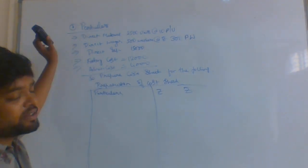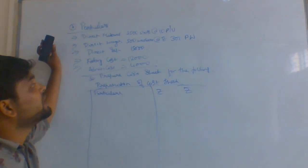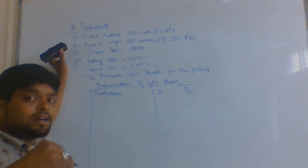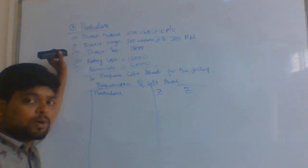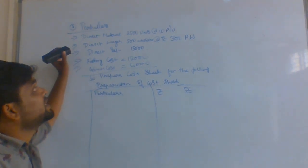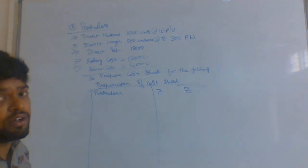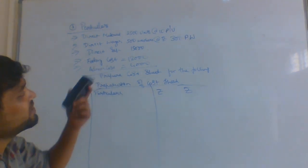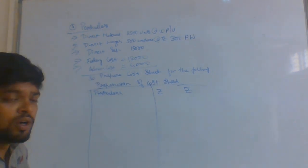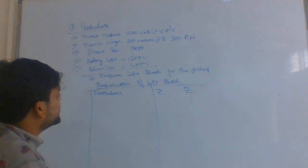In the previous question, they are given the direct material amount directly. But here they are given per unit. How we need to calculate that — we don't know. Let us explain.